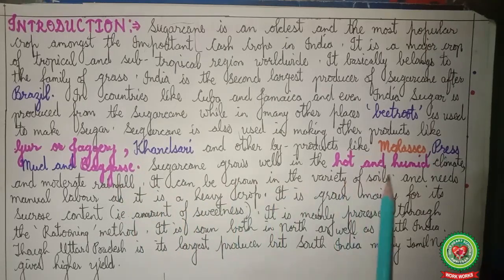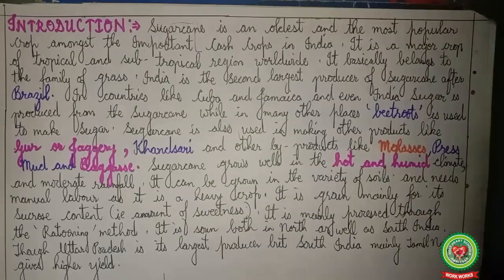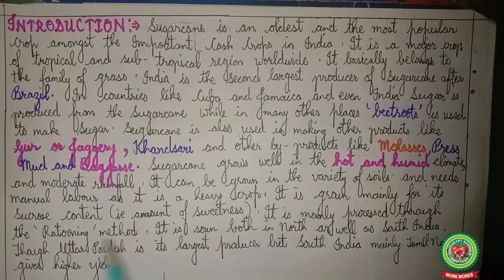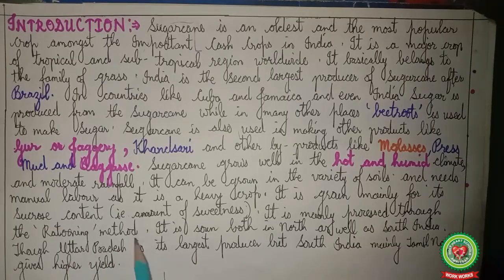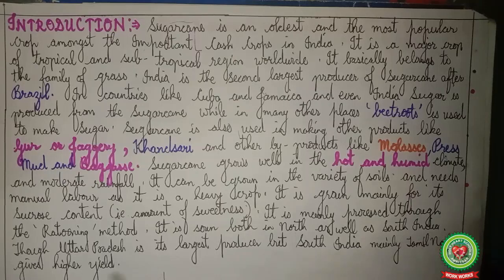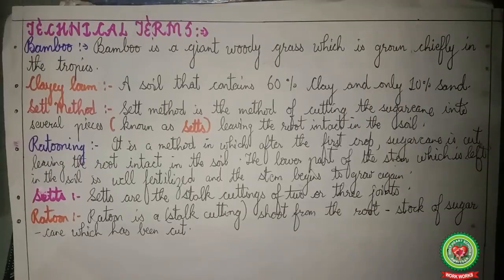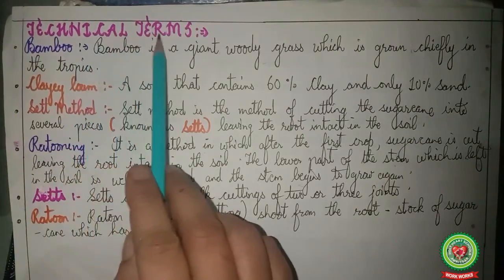Sugarcane grows well in hot and humid climate with moderate rainfall. It can be grown in a variety of soils and needs manual labor as it is a very heavy crop — the work from growing to harvesting is done by hand. It is grown mainly for its sucrose content, the amount of sweetness present in its stem. It is mainly processed through the ratooning method, and is sown both in North and South India. Though Uttar Pradesh is its largest producer, South India — mainly Tamil Nadu — gives higher yield and better quality sugarcane from vast tracts of black lava soil.